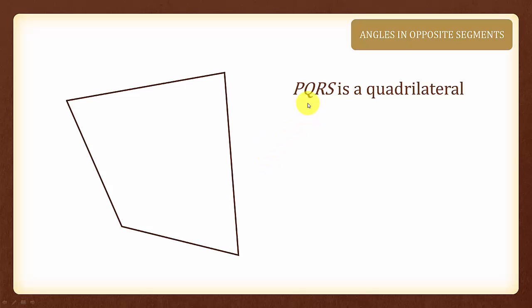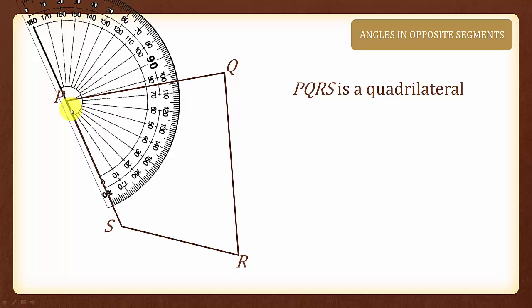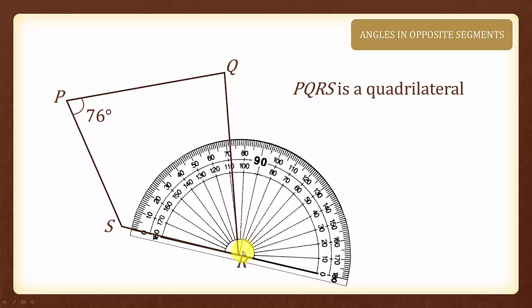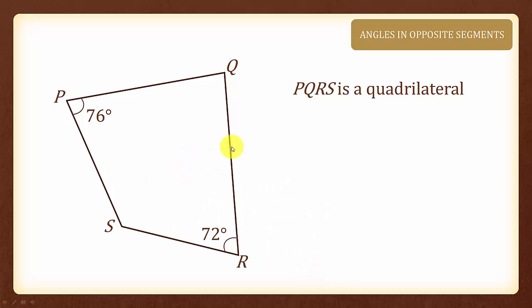Now let us look at the quadrilateral PQRS. And we will measure angle P here which is 76 degrees. Next, we will measure angle R and it is 72 degrees.